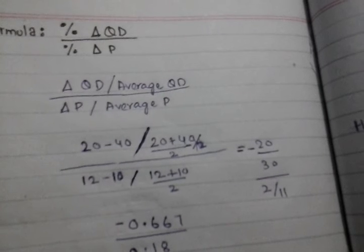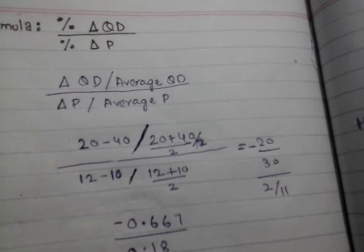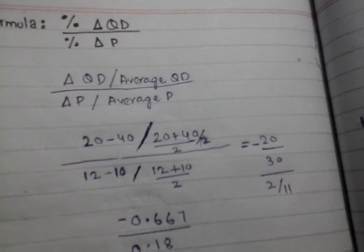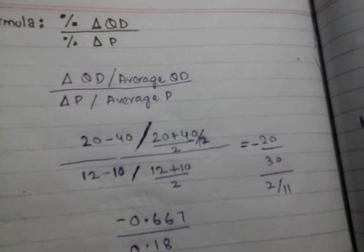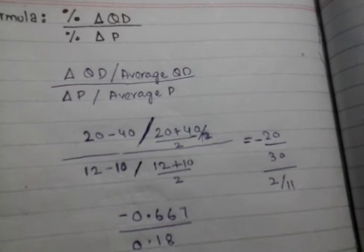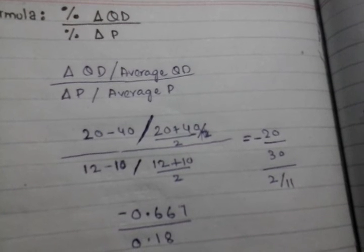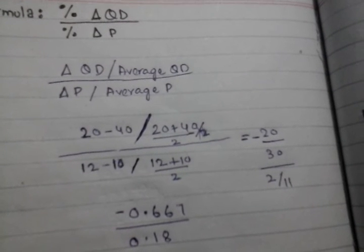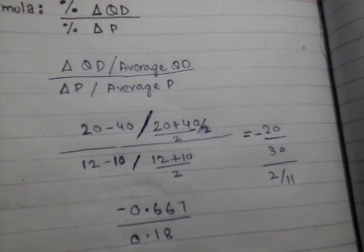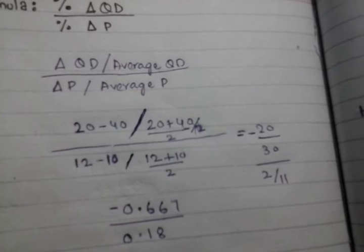For calculating arc elasticity of demand, we have the formula: percentage change in quantity demand divided by percentage change in price. Percentage change in quantity demand means change in quantity demand divided by average quantity demand. Percentage change in price means change in price divided by average price.